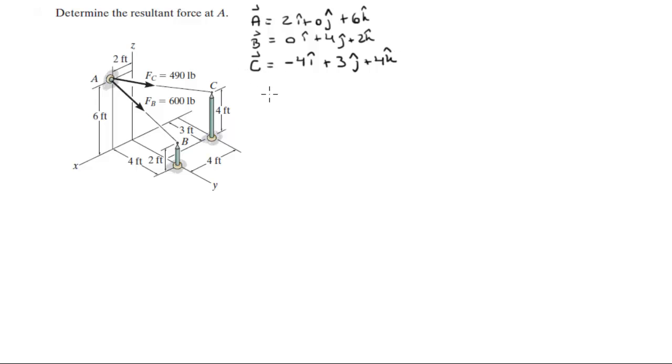So the first vector AB you can find it by subtracting vector A from vector B and you get it to be negative 2i plus 4j minus 4k. Now that you have the Cartesian vector form of vector AB you can find its magnitude.